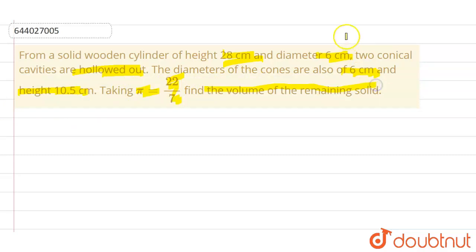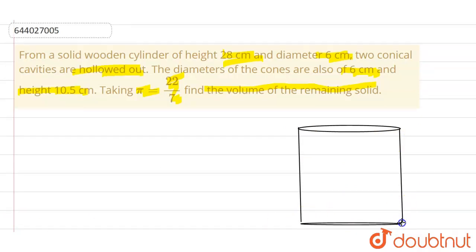So first of all, let's draw a cylinder. Now try to understand this: in this cylinder, the cavities could be cut only one from the base and the other from the top. Think this through - they cannot be cut from the sideways.